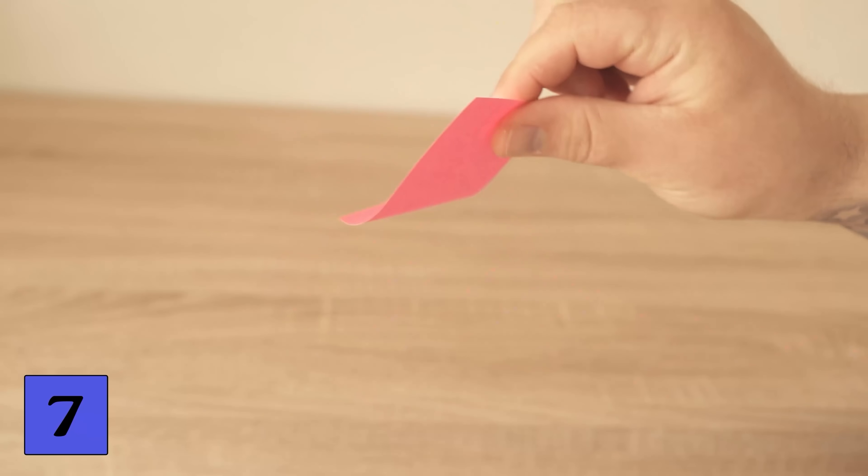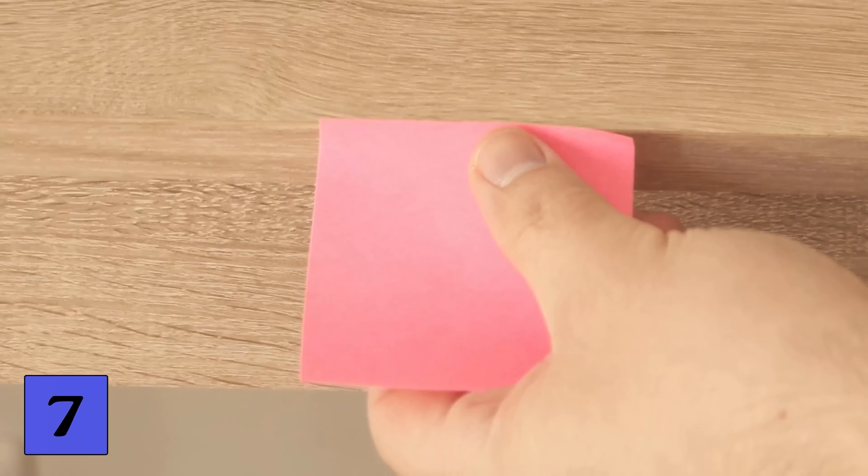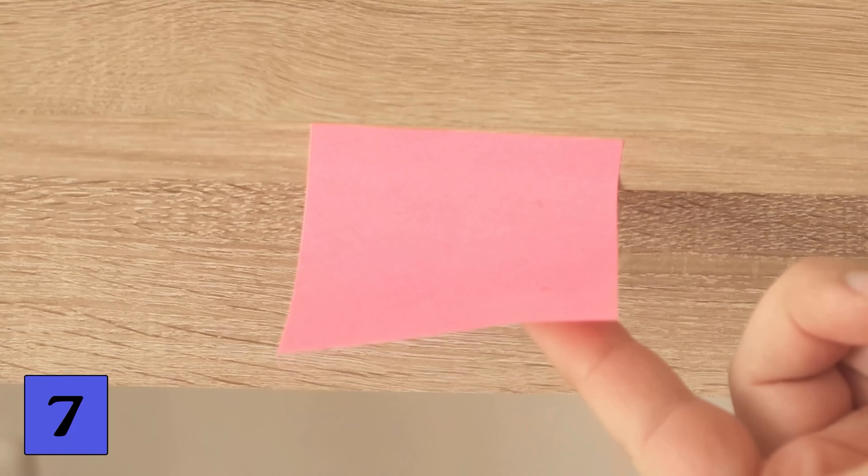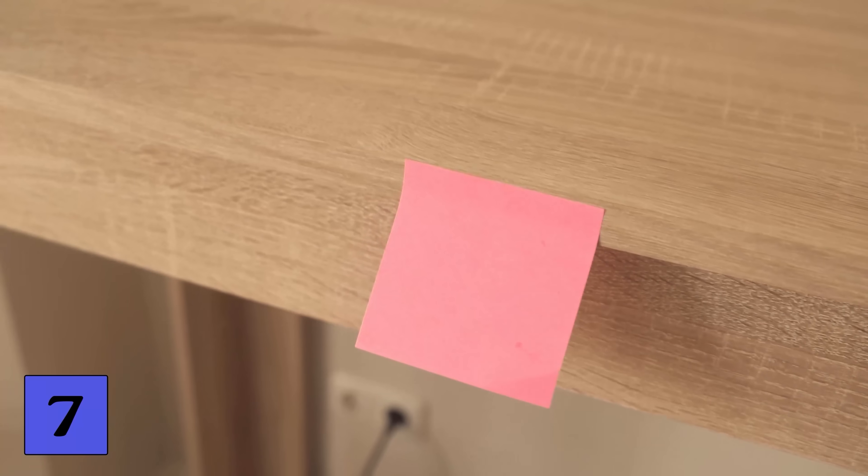Which means that the post-it doesn't hold so well. Because the adhesive side is already so deformed it happens that when you stick it somewhere it slowly moves further and further upwards and eventually falls off. There is actually a very simple and different way to remove it so that it exactly this does not happen.